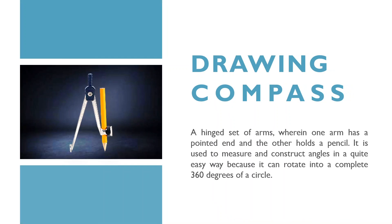Next is the drawing compass. A drawing compass is a hinged set of arms wherein one arm has a pointed end and the other holds a pencil. It is used to measure and construct angles in an easy way because it can rotate into a complete 360 degrees of a circle. When you have a circle in which you want to create angles, a drawing compass helps measure them as you can keep one end at any particular point and with the pencil end measure the distance. Once you have the distance, place the drawing compass on a square or protractor to measure the angles.